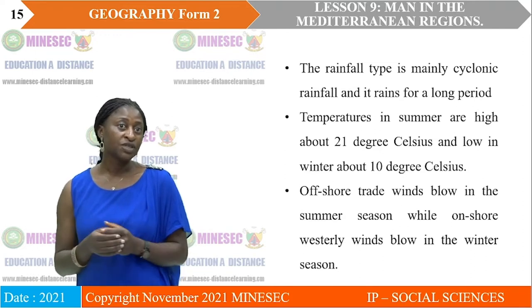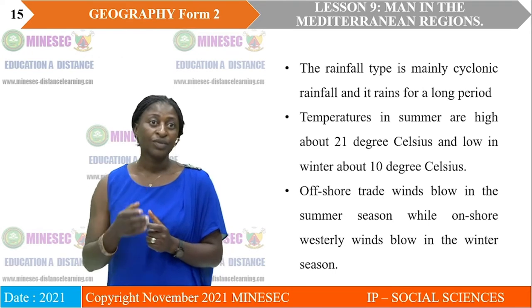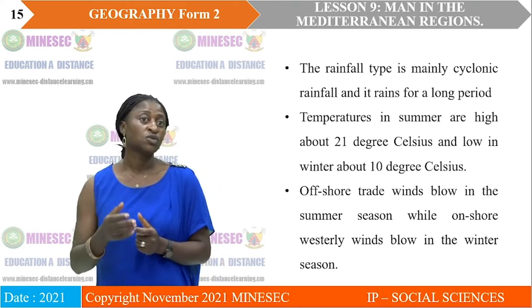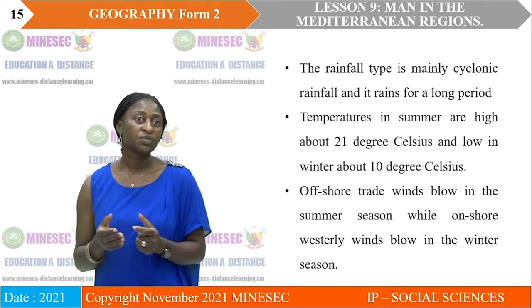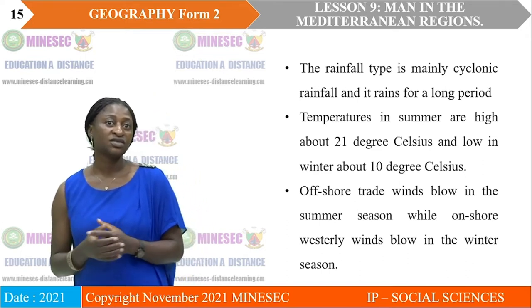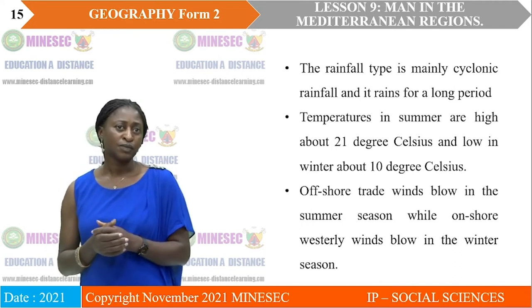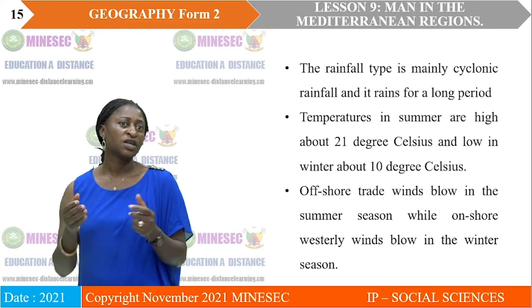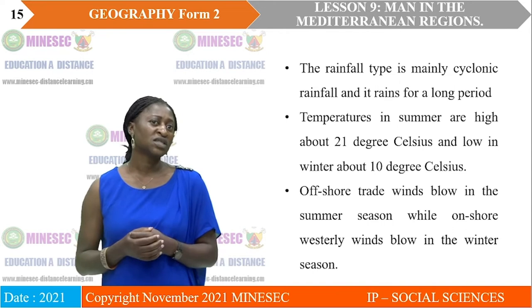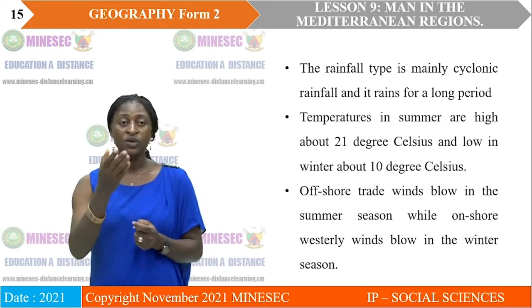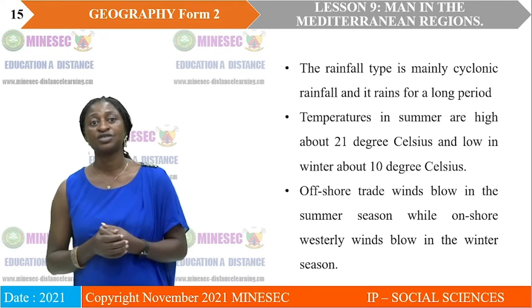The temperatures are also moderate. We have a summer temperature of 21 degrees centigrade and winter temperatures that go down to about 10 degrees centigrade — very moderate temperatures, as opposed to other areas of the world where winter temperatures go right down to 0 degrees centigrade. So in the Mediterranean region, temperatures are very moderate.